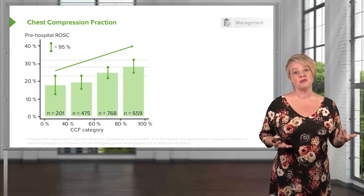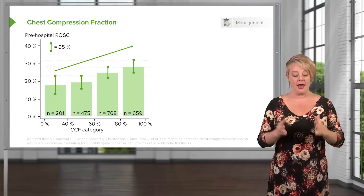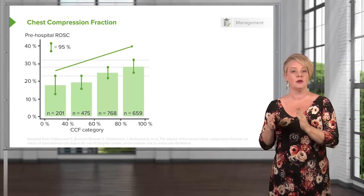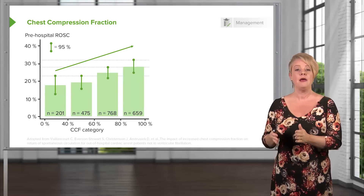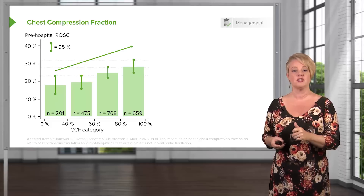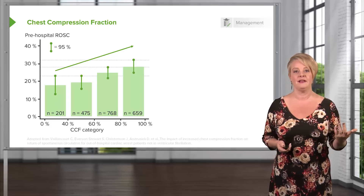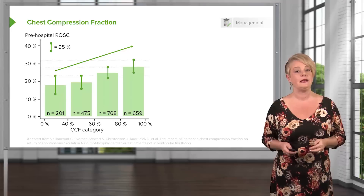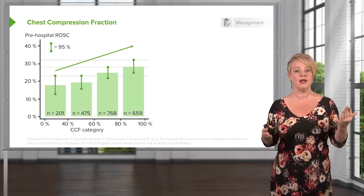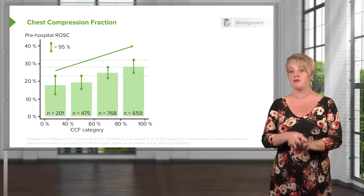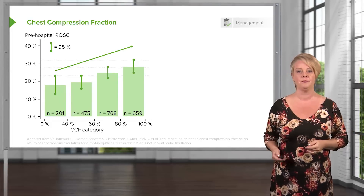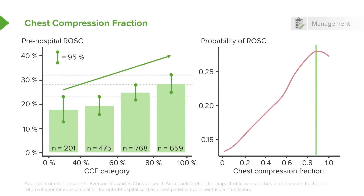This graph is about chest compression fraction. In this study, they looked at the percentage of total cardiac arrest time during which active chest compressions were being performed, stratifying by percentage: 0 to 20, 20 to 40, 40 to 60, and so on. They found a linear increase in the likelihood of return of spontaneous circulation as the chest compression fraction increased. So if you spend more time during the code performing CPR, you get a better outcome and a higher probability of survival. A survival curve view of the same data shows chest compression fractions of 0.8 to 0.9 — or 80 to 90% of the time — produce the highest likelihood of return of spontaneous circulation.